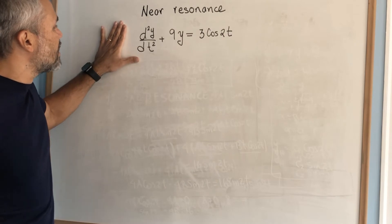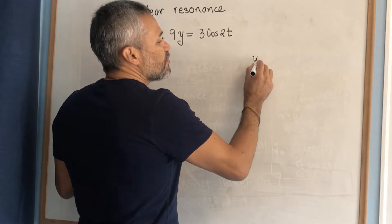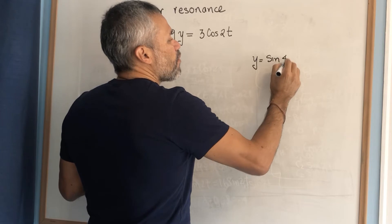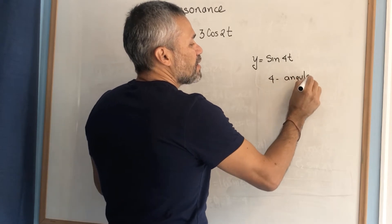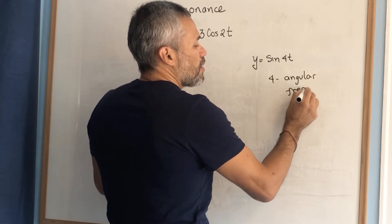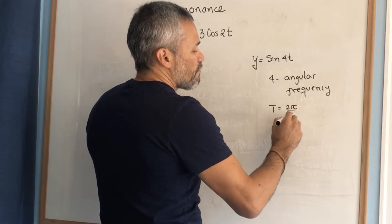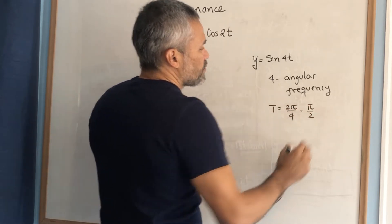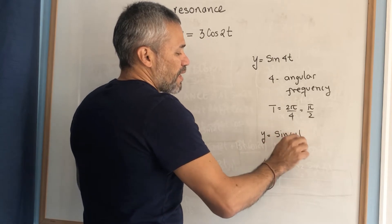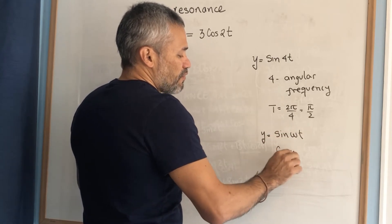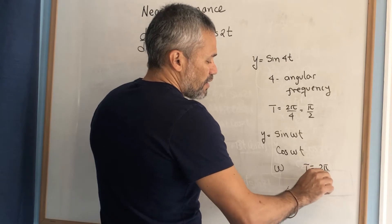In this video, we will explain how to sketch the graph of a solution of a differential equation. Remember that for a function like sine of 4t, the 4 is called the angular frequency, and the period of that function is 2π over 4, which is π over 2. In general, if we have y equal to sine of ωt or cosine of ωt, ω is the angular frequency and the period is 2π over ω.